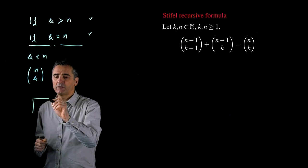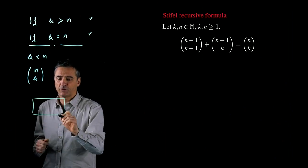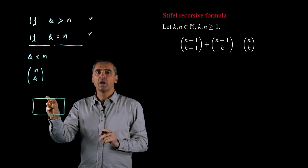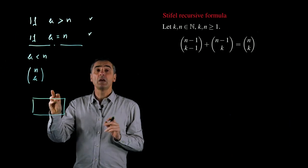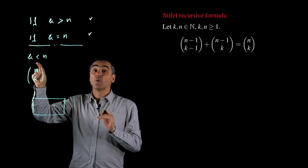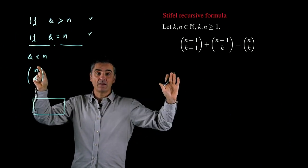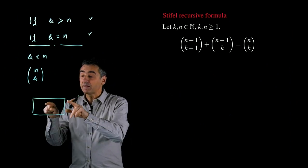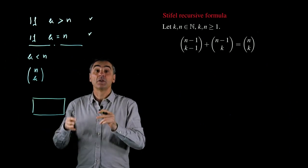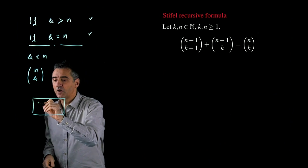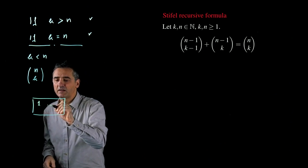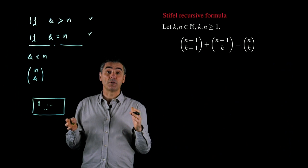I have to put in a box k numbers. This is my box. I have to put inside my box k numbers, chosen between 1, 2, 3, and n. But I want that inside the box, there is the number 1. Here 1, and then other k minus 1 numbers.